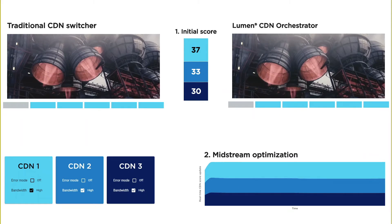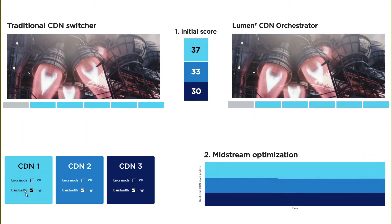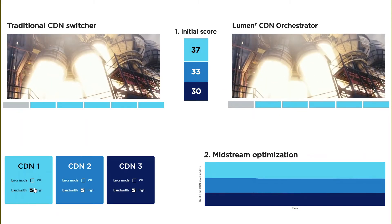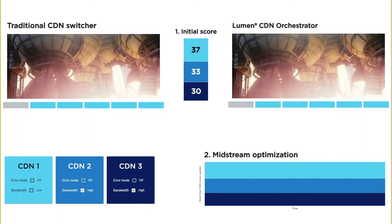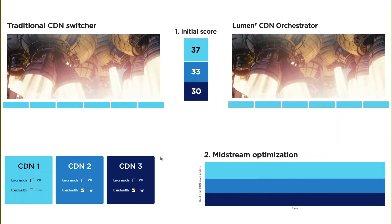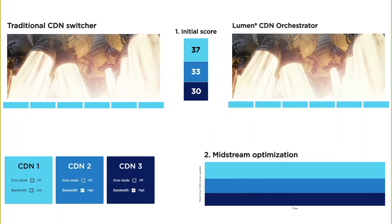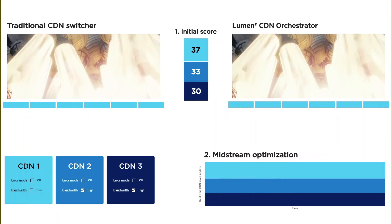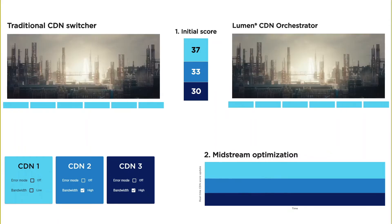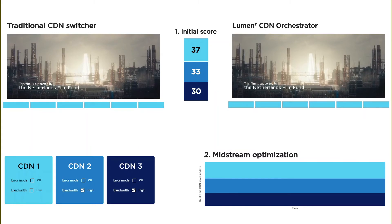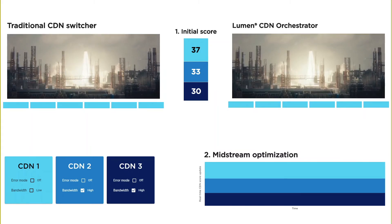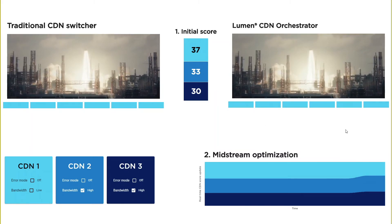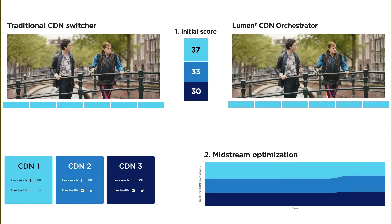The first scenario I want to run is a bandwidth drop. I will simulate congestion on the network and drop CDN1 bandwidth. You can see that CDN Orchestrator notices the bandwidth drop and switches to the second highest scoring CDN, which is CDN2.